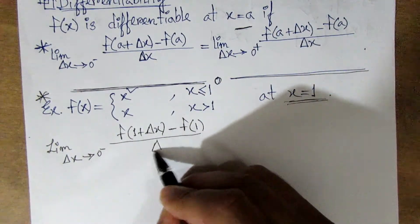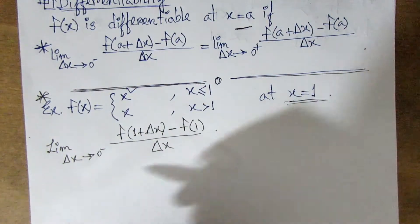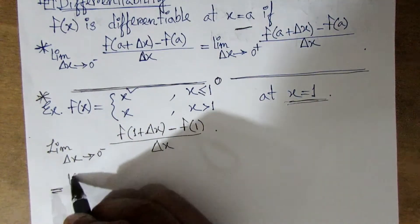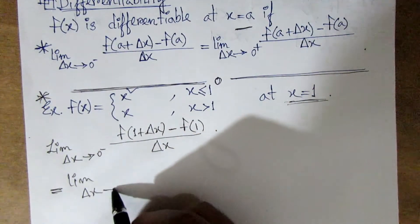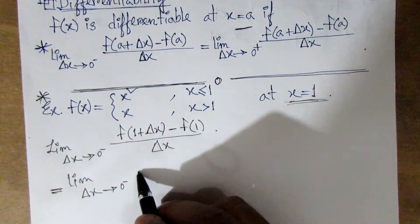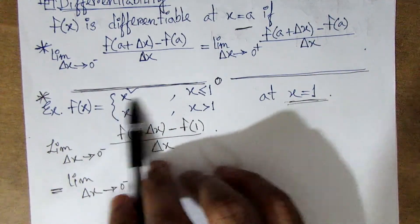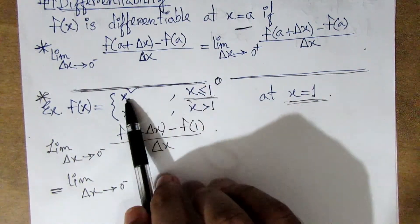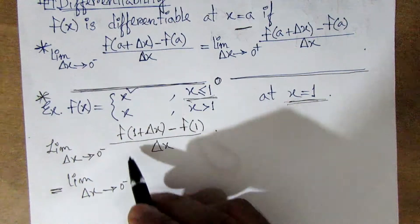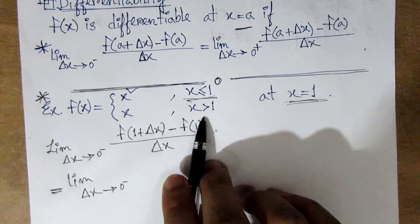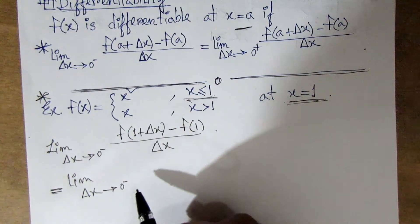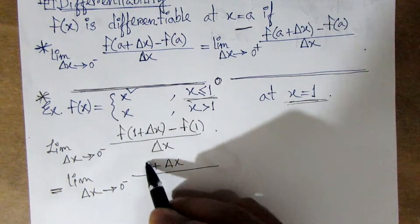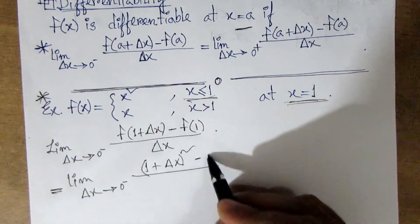We are going to evaluate at a = 1. We have the function f(x) = x squared. We consider 1 plus Δx, all squared — using the expansion (1 + Δx)².